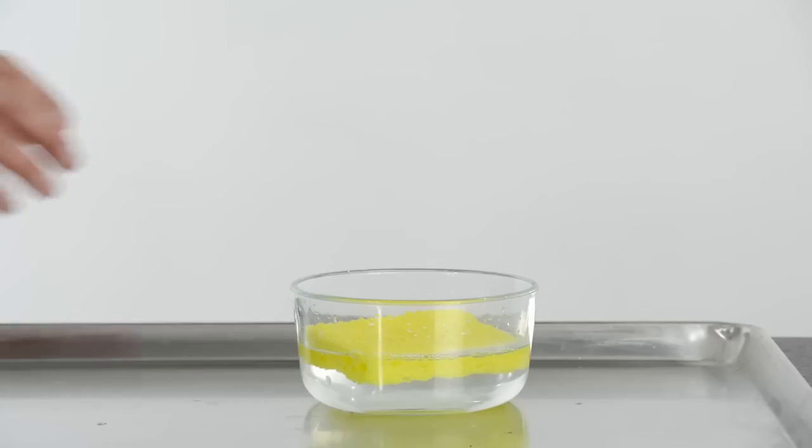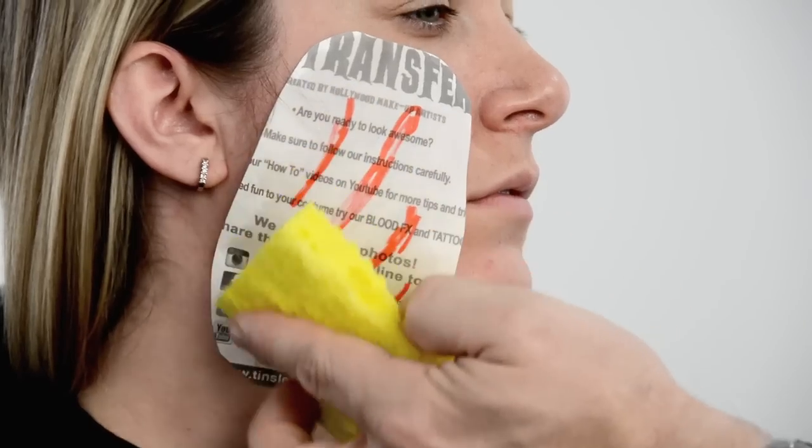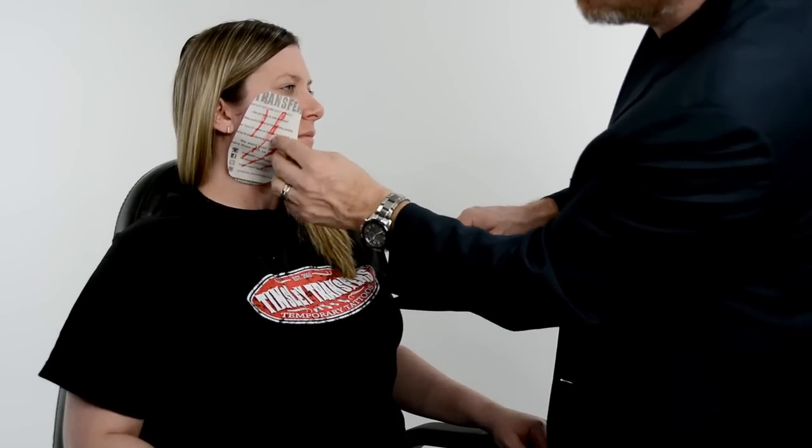Once your transfer is secure, get your sponge and wet the adhesive paper. It is very important the paper is fully saturated, so please don't rush. When you are ready to remove the adhesive paper, give it one last push into the skin and then slowly peel the paper away.